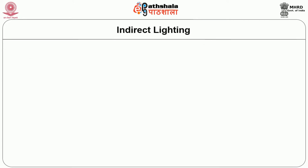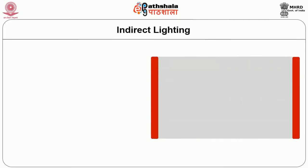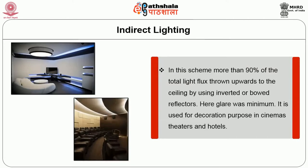Indirect lighting: in this scheme, more than 90% of total light flux is thrown upwards to the ceiling by using inverted or bowl-shaped reflectors. Here, glare is minimum. It is used for decoration purposes in cinema theaters and hotels.